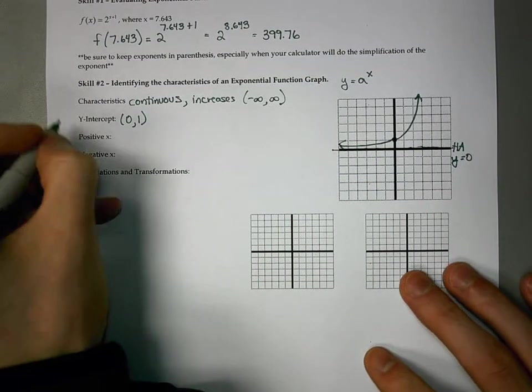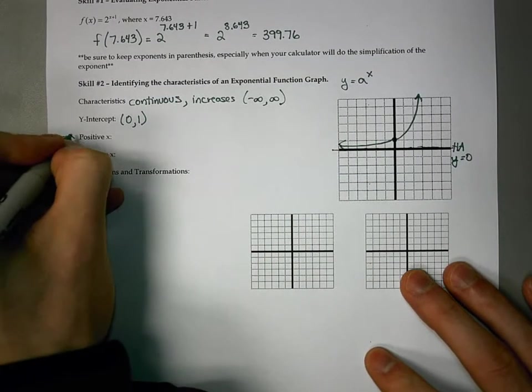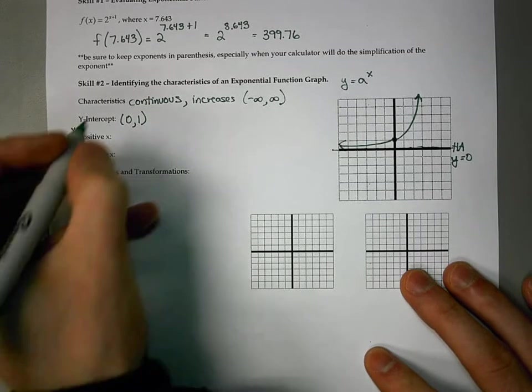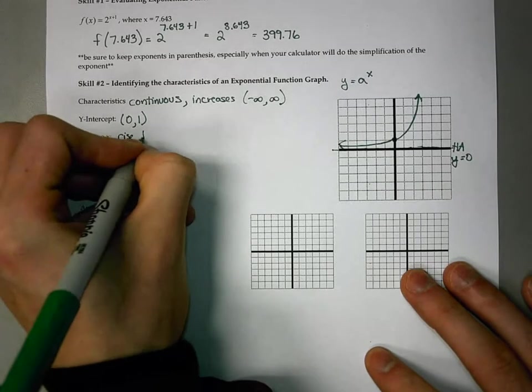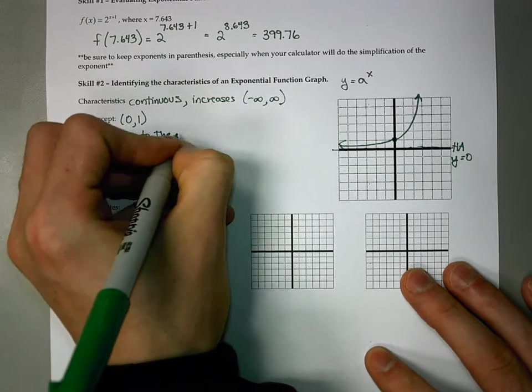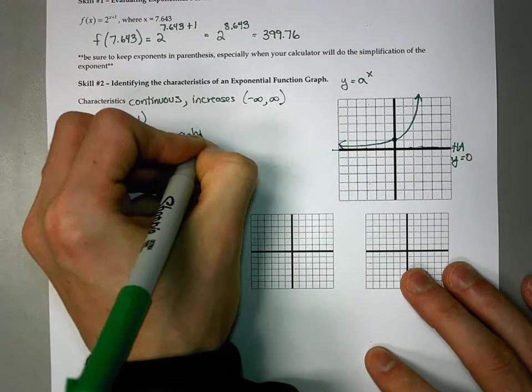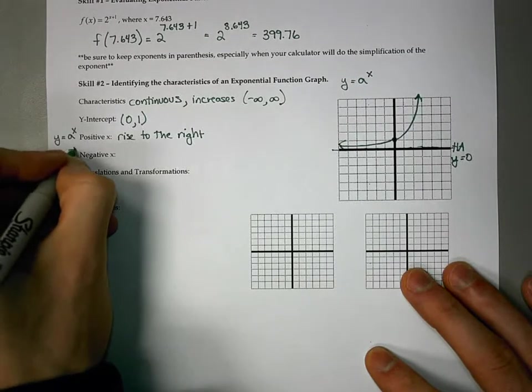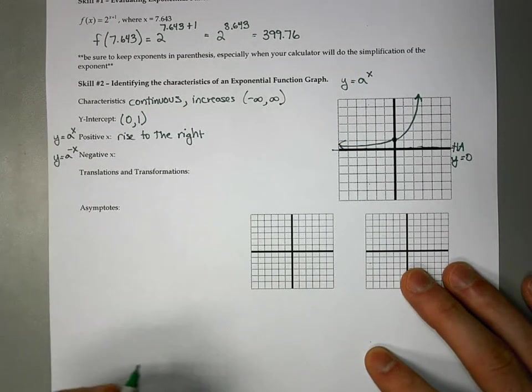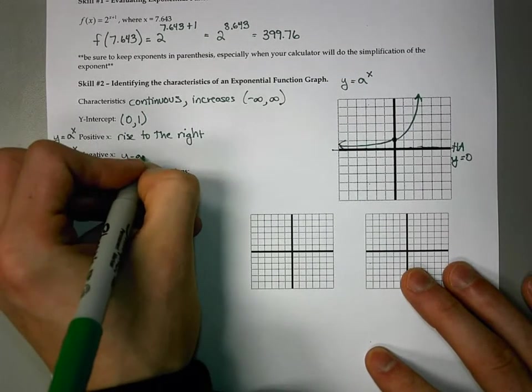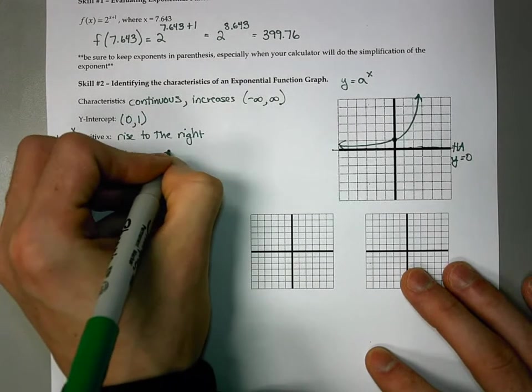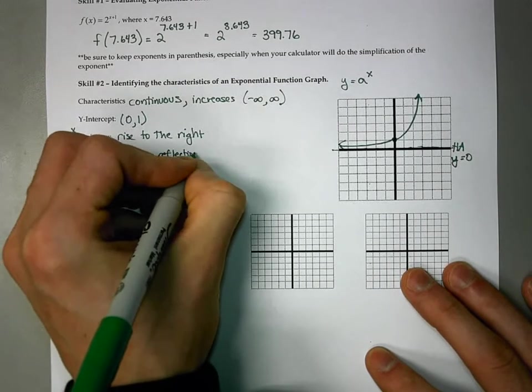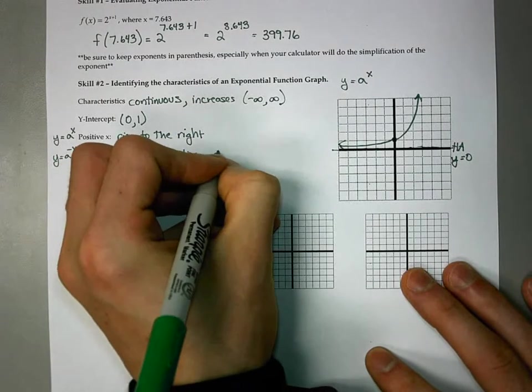If we have a positive x, in other words y equals a to the x, the graph is going to rise to the right. And if I have a negative x, it is going to be a y-axis reflection, which means the graph is going to decrease as you go to the right.